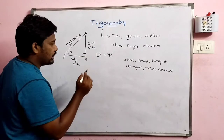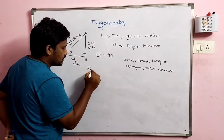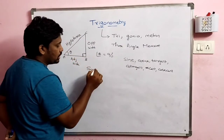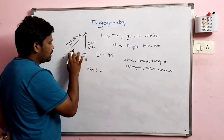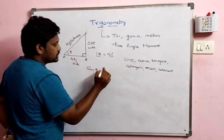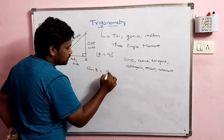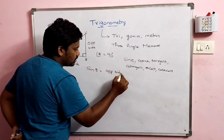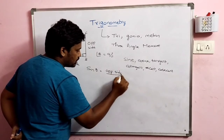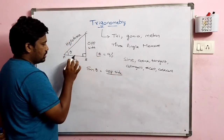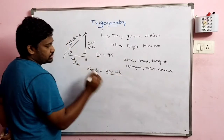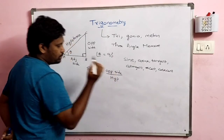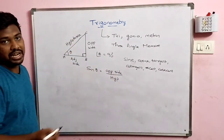Point number one: sine theta. The sine of that angle theta is represented as sin θ. Sine theta equals opposite side divided by hypotenuse. So, sin θ = opposite side / hypotenuse.